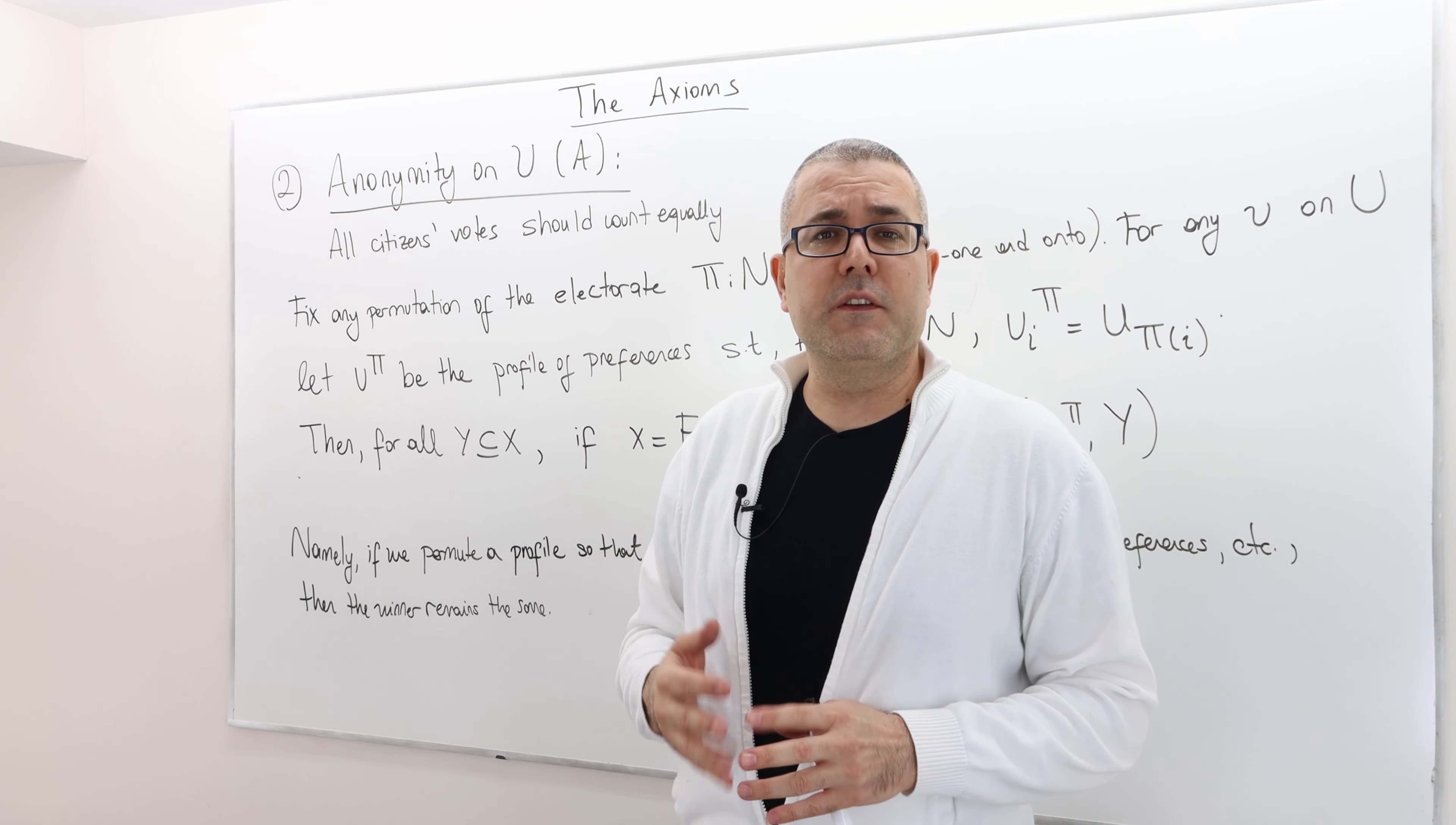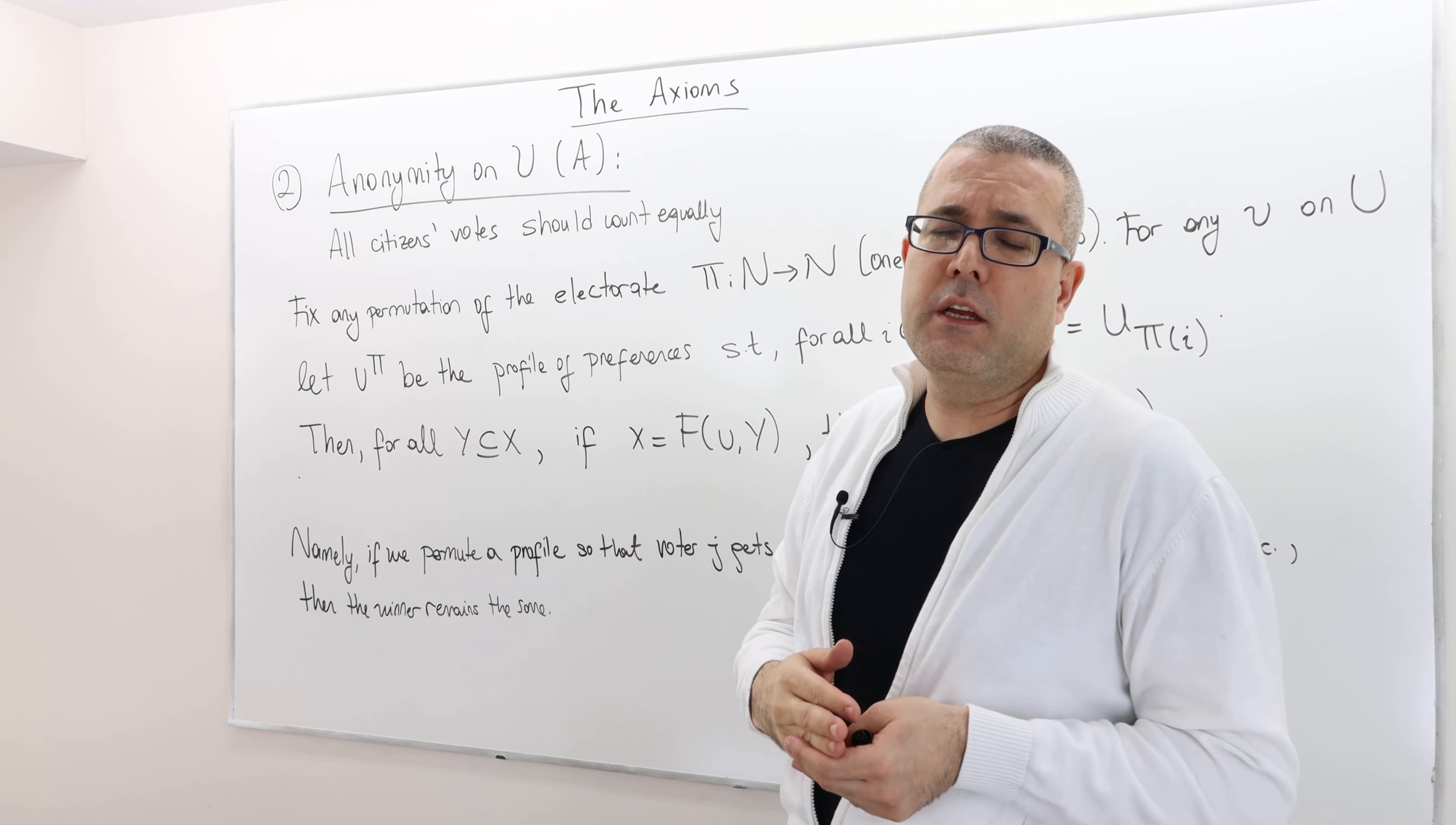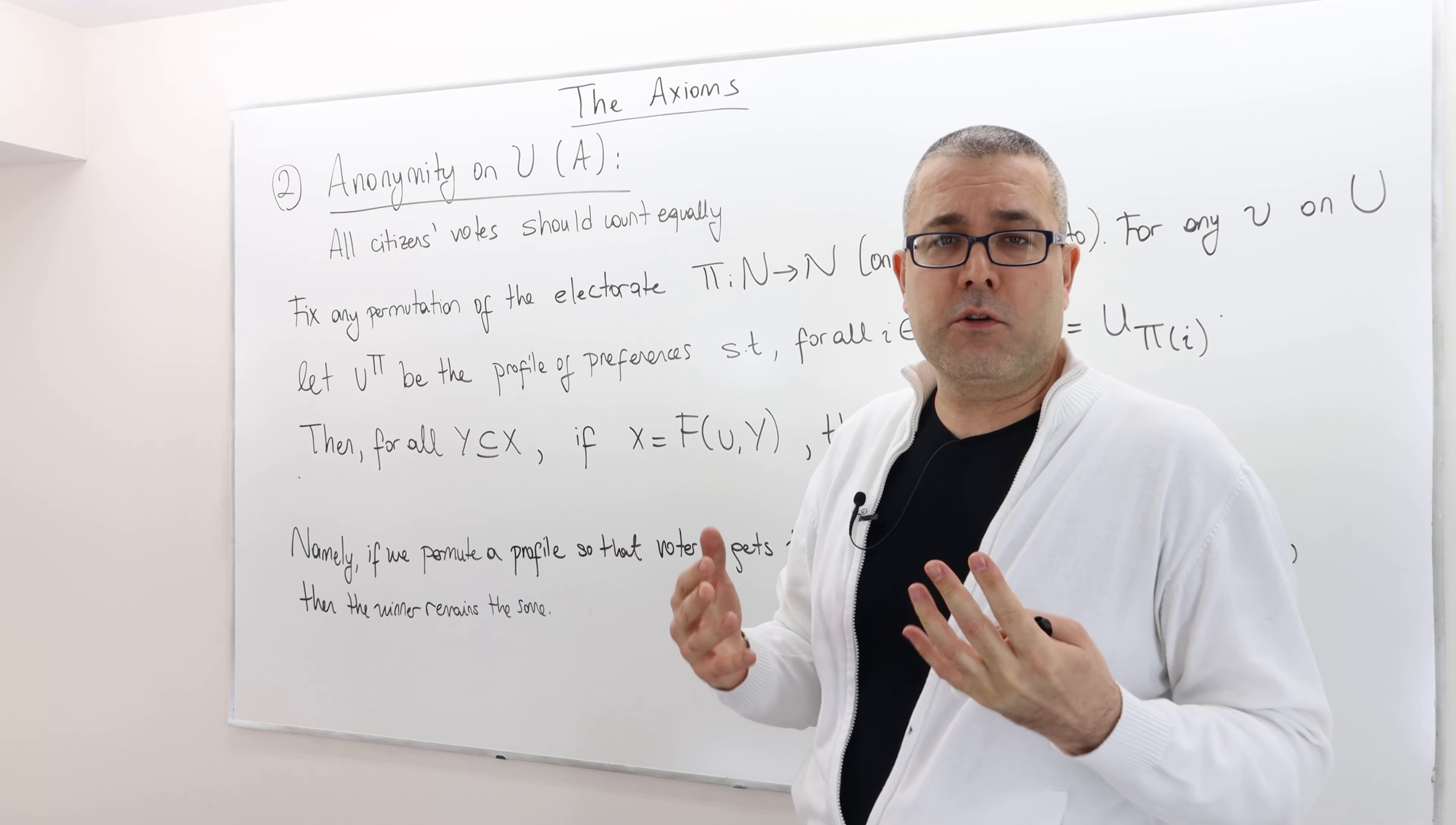All right. Our second axiom is called anonymity. So I'm going to refer to it as A. The basic idea is very simple. All citizens' votes should count equally. So the voting rule shouldn't favor any voters or any group of voters, which is what we expect from a democratic election.